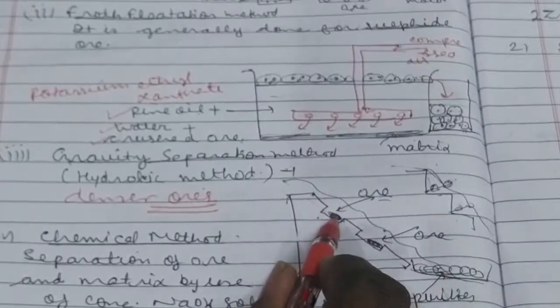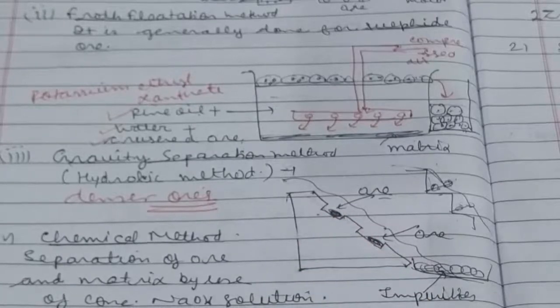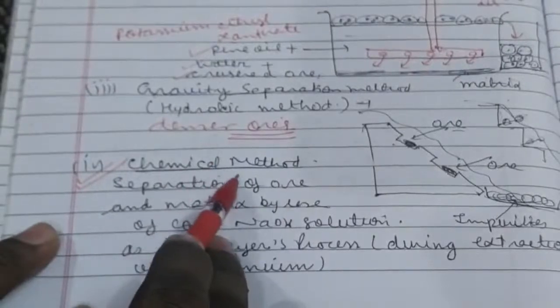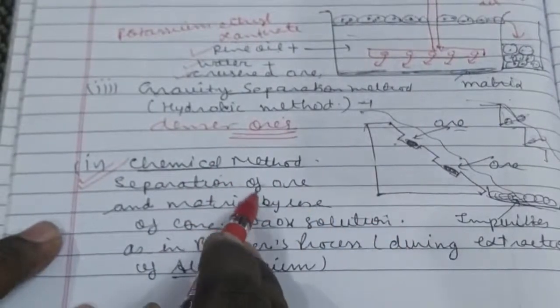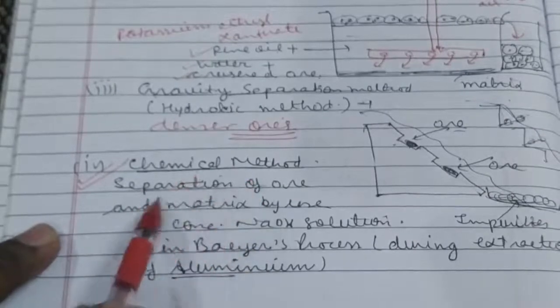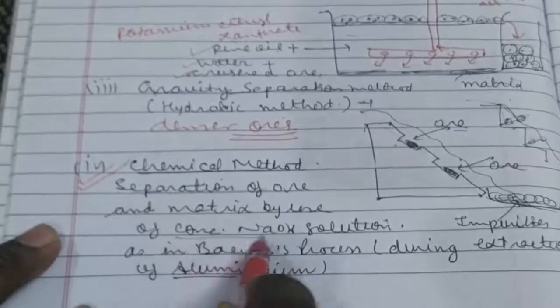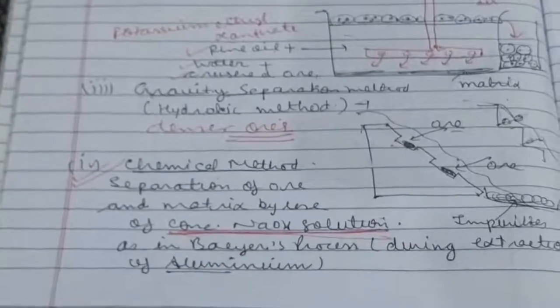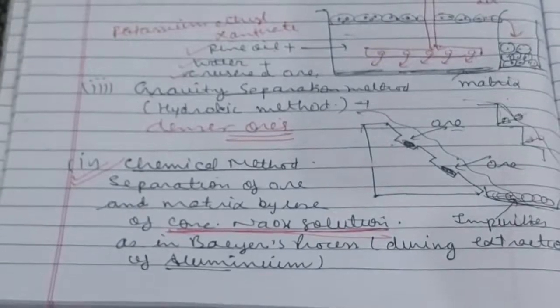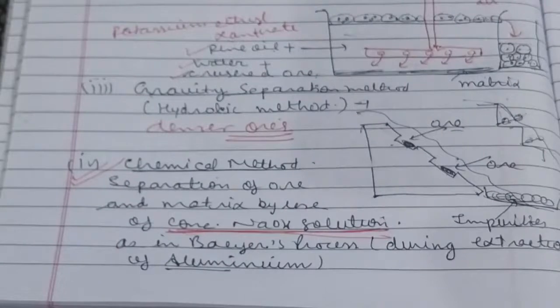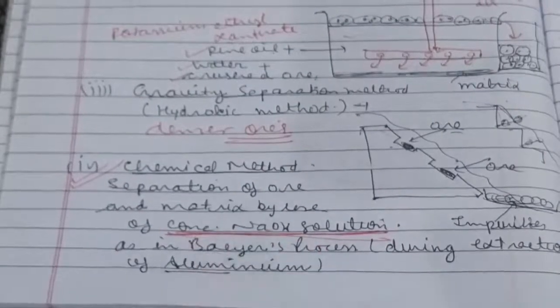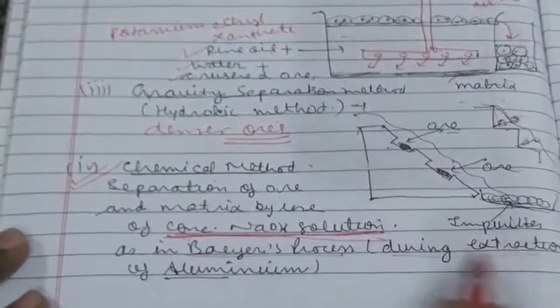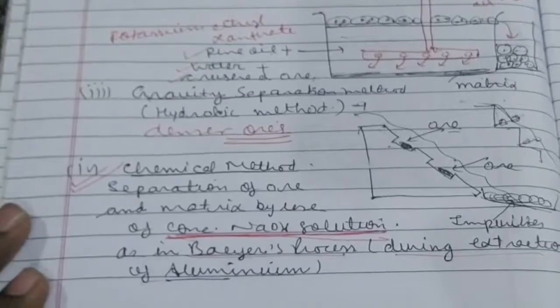This is chemical method. It is basically used in the extraction of aluminum from bauxite. In this you have to use the chemical or reagent which is concentrated sodium hydroxide solution. It is known that bauxite is Al2O3·2H2O which is amphoteric in nature and can easily react with this, leaving behind the impurities. This reagent is used in Bayer's process during extraction of aluminum. So this was the first step.